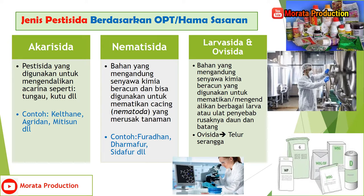Yang kedelapan yaitu nematisida, adalah bahan yang mengandung senyawa kimia beracun dan bisa digunakan untuk mematikan cacing atau nematoda yang merusak tanaman. Contoh produknya adalah Furadan, Darmafur, Sidafur, dan lain-lain.